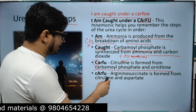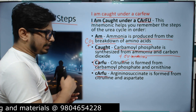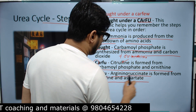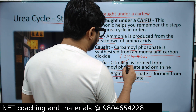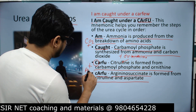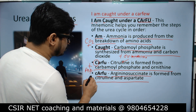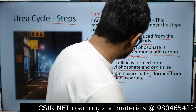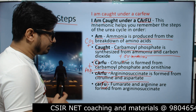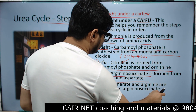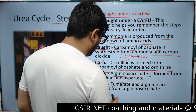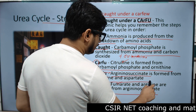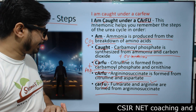Then A in 'A Curfew' stands for Argininosuccinate, which is formed from Citrulline and Aspartate — Citrulline plus Aspartate produces Argininosuccinate. Then F stands for Fumarate: Argininosuccinate breaks down to produce both Fumarate and Arginine, which are separated at the end.